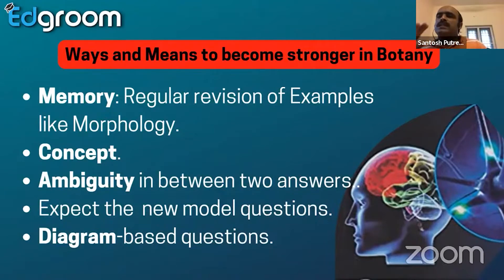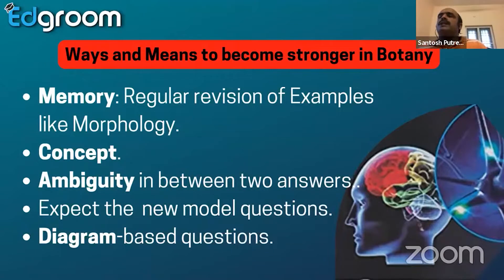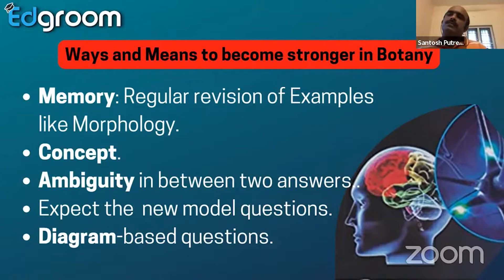Read the question properly first. Eliminate the answers that do not relate to the question. Then peacefully read the question two to three times and see which option is leading to the answer. Still, if you have a problem answering the question, think about why each option would be related to the question. One of the options will not have a linkage with the question — it's a reverse type of approach. Therefore, you can eliminate it and arrive at the correct answer.